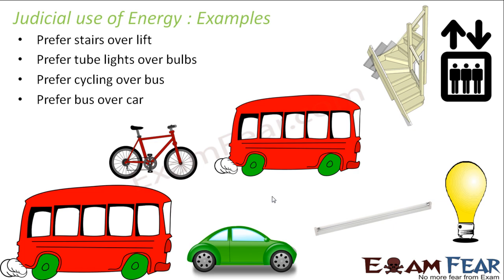We should prefer a bus over a car. Cycling doesn't always solve the purpose — for 30 to 50 kilometers, you can't cycle. In that case, prefer a bus over a car because a bus utilizes some fuel but carries around 50 passengers, whereas a car uses almost the same fuel but carries just one passenger. Similarly, while commuting to school or office, prefer car pooling. If six of you live in the same locality and go to the same school, travel in one car and save the fuel of the remaining five cars.